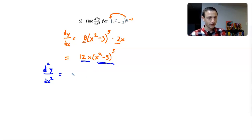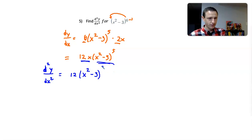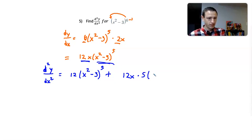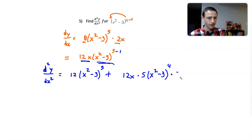Now I have to use product rule. Product rule: the derivative of the first function — so the derivative of 12x is 12 — times the original second function, x squared minus 3, raised to the 5th. Plus the original first function, 12x, times the derivative of the second function. For that we use chain rule: 5 times x squared minus 3, raised to the 4th, times the derivative of the inside, which is 2x.